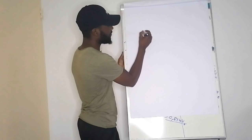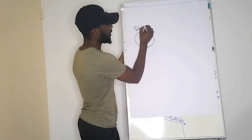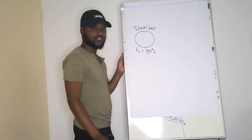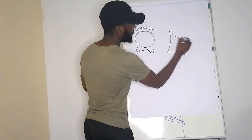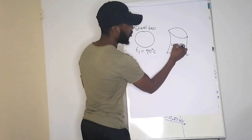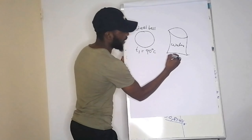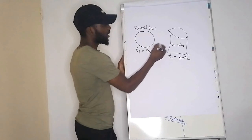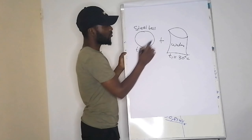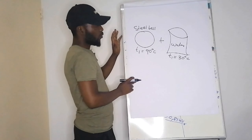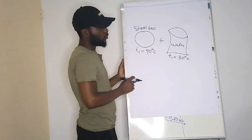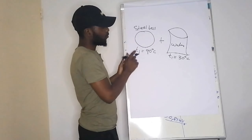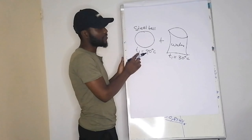For example, we have two substances: maybe a steel ball at 90 degrees Celsius, and then we have a container of water, maybe at an initial temperature of 30 degrees Celsius. If you take the steel ball and put it inside the container of water, what will happen is that a transfer of heat will take place from the steel ball, because it has a higher temperature compared to water.